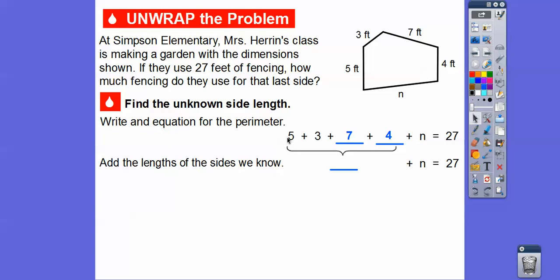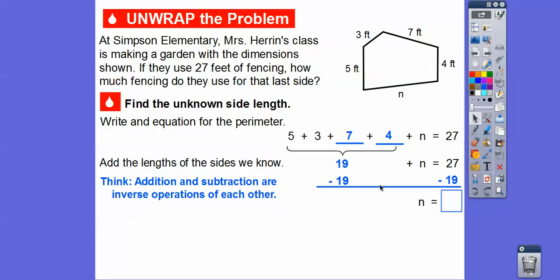So we'll go ahead and add these four numbers together. 5 plus 3 is 8, 8 plus 7 is 15, 15 plus 4 is 19. So that's what goes right there. And then addition and subtraction are inverse operations of each other. So here it says plus 19, so 19 plus some number equals 27. So to find this other number, we can subtract 19 from 27, and that'll give us 19 plus that number will give us that 27. So let's subtract 19.